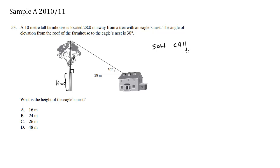SOH-CAH-TOA. We have the opposite and we have the adjacent. Opposite, adjacent. We're going to use the tan ratio. So tan 30 degrees equals opposite over adjacent which is h over 28.